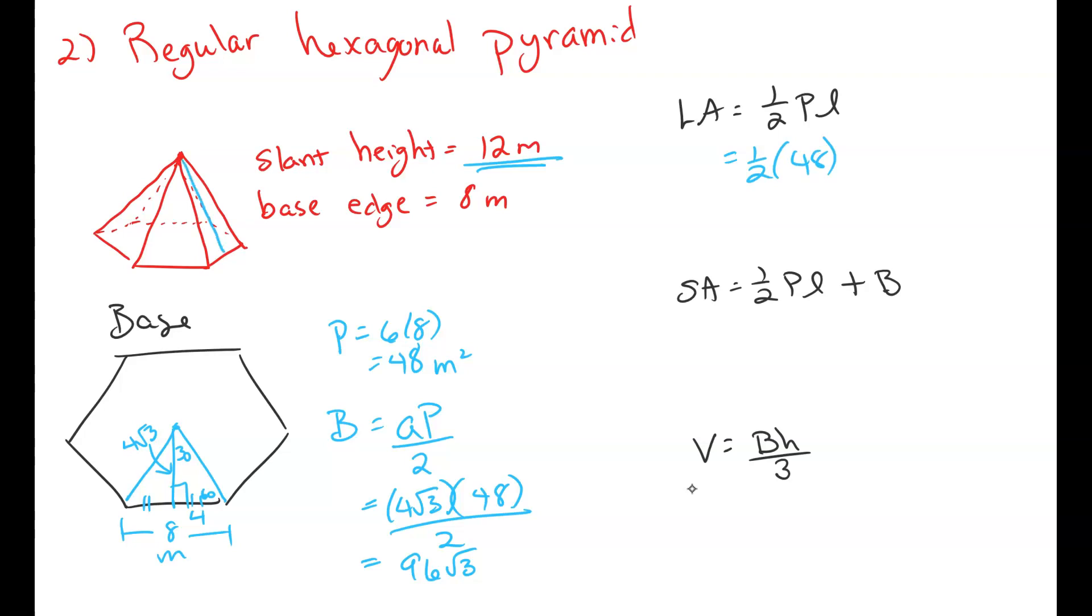By the way, that means your slant height is right here, right, my friends? That's our L is 12. So 1 half of 48 times 12. That's going to give us 288 square meters.